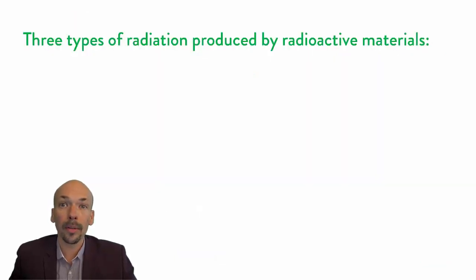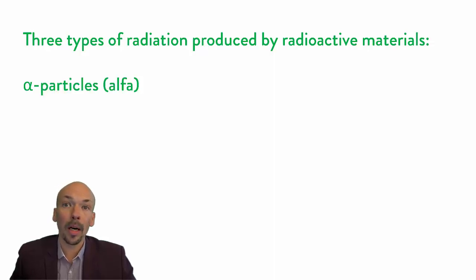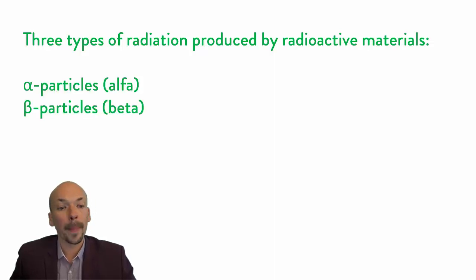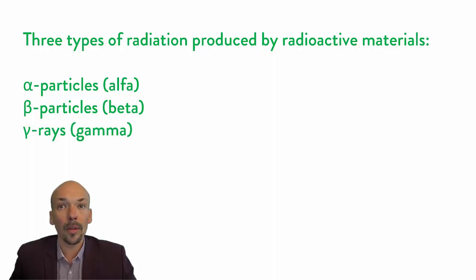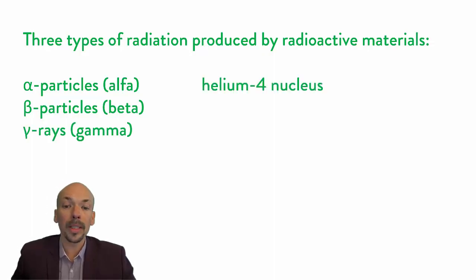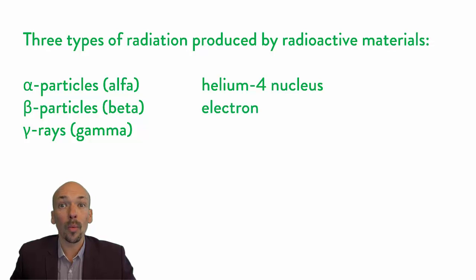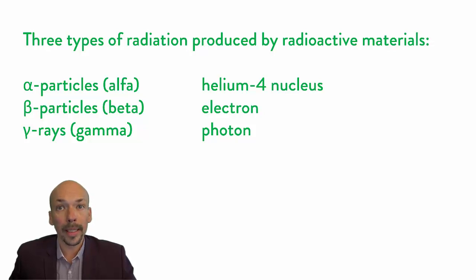In general there are three different kinds of radiation produced by radioactive materials: alpha particles, beta particles, and gamma rays. The alpha particle consists of a helium-4 nucleus without the electrons. Beta particles consist of one electron, and gamma rays consist of a photon. You can compare this photon with light rays, but they are invisible to our eyes.